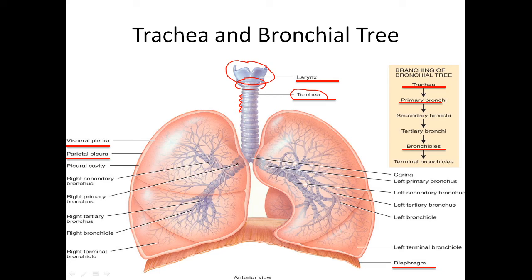The trachea then branches — one branch goes to our right lung, one to our left. Remember on these pictures right and left are switched. These branches are called bronchi. If you look at your list, it says primary and secondary bronchi. Your primary bronchi are the first branches, and as it branches again those are secondary and tertiary branches. You only need to worry about the primary bronchus — the first branch — and these secondary branches coming down.